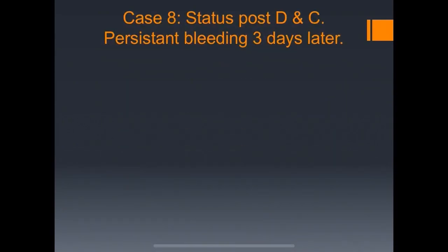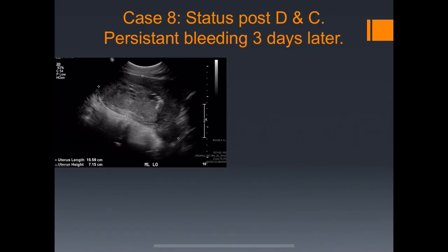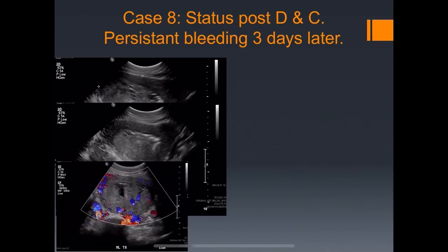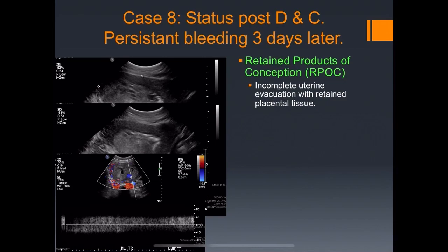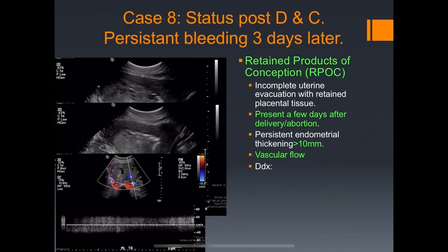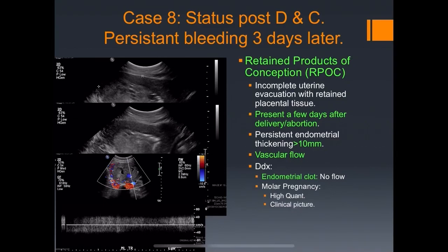Status post-DNC with persistent bleeding three days later: sagittal view shows a thickened endometrium with color flow and high velocities — consistent with retained products of conception. This represents incomplete uterine evacuation with retained placental tissue, presenting days after delivery or abortion. You want to differentiate this from a normal endometrial clot, which usually has no flow. Occasionally retained products can have no flow but that's relatively rare. Differentiate also from molar pregnancy — which has a sky-high quant and different clinical picture — and from AVM, which tends to be myometrial in location.